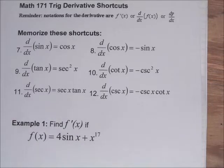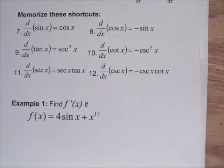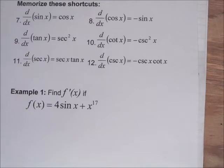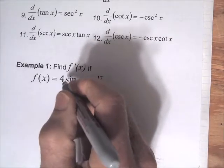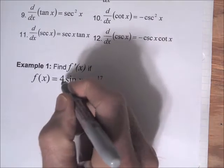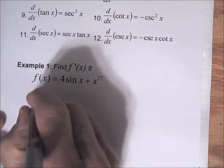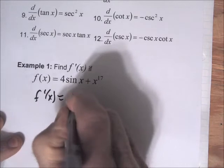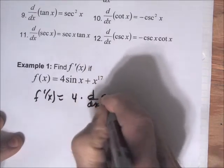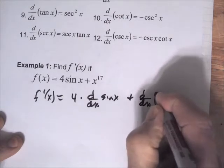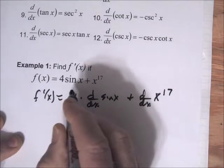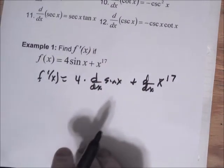I'll go over some examples of how to use these formulas. We have a function f(x) = 4 sin x + x^17. We can apply several different rules here — we can factor out of the derivative. So f′(x) is going to be 4 times the derivative of sine plus the derivative of x^17, since the derivative of a sum is the sum of the derivatives.